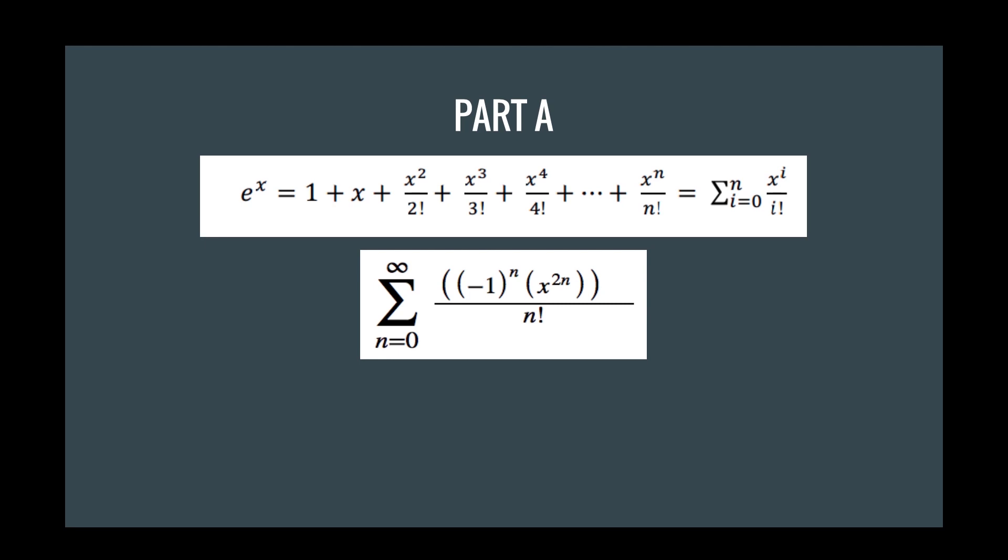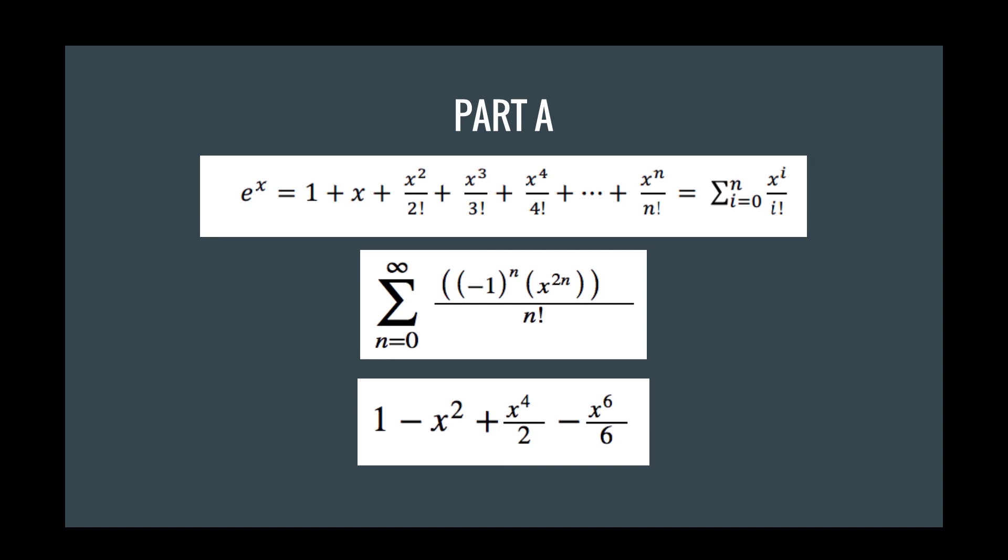So that's the easy part, and then the easier part is just plugging in the values of n equals 0, 1, 2, and 3 to get the first four terms, which is equal to 1 minus x squared plus x to the fourth over 2 minus x to the sixth over 6.